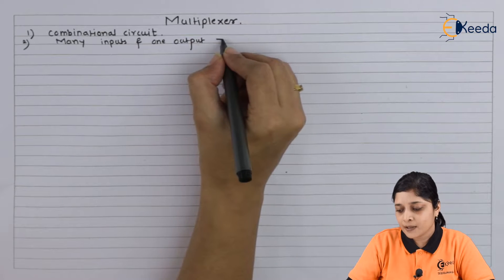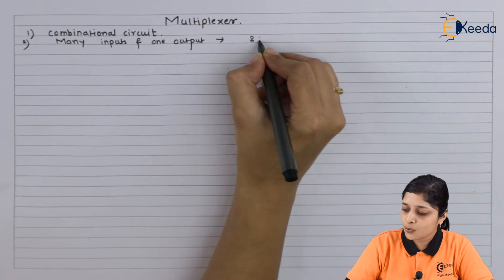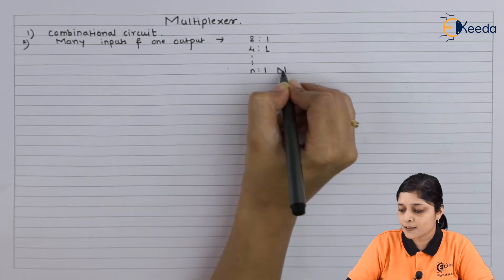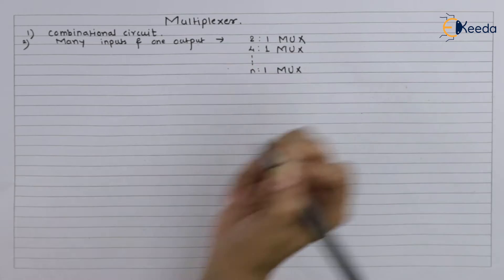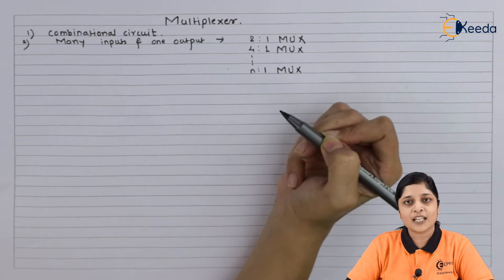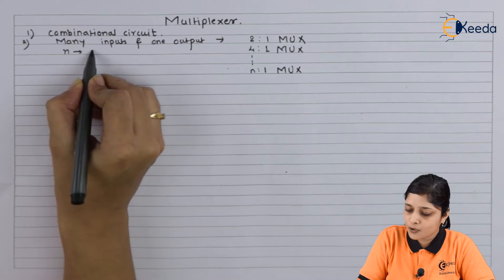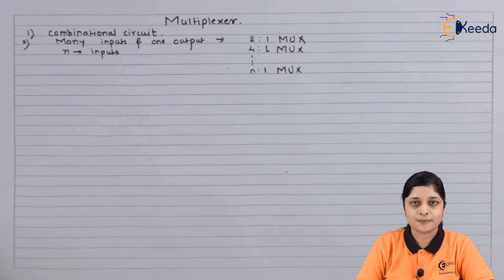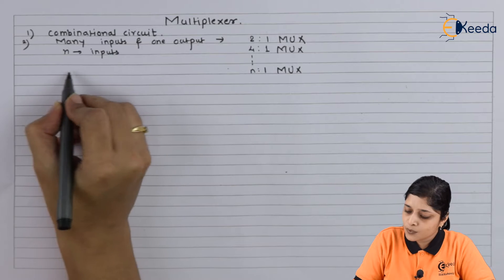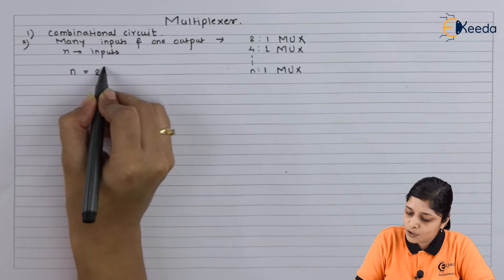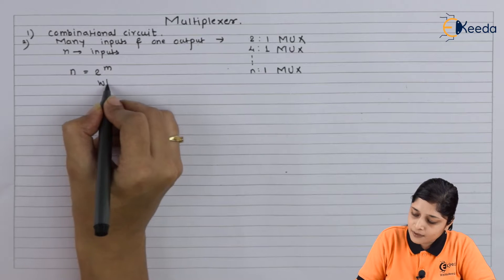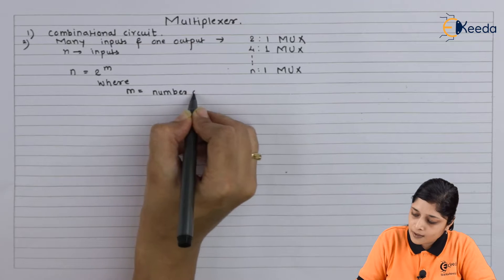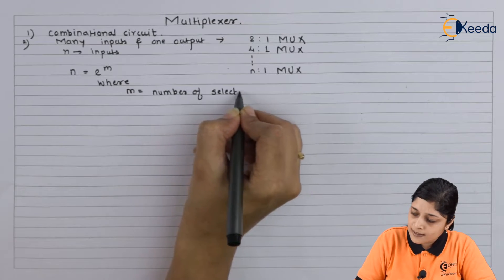So we can represent multiplexer as 2:1 MUX, 4:1 MUX, up to n:1 MUX. Now these are the input lines where n equals to inputs and one is the output. Now n equals to 2 raised to the power m, where m equals to number of select lines.